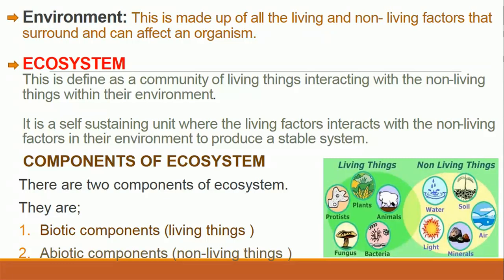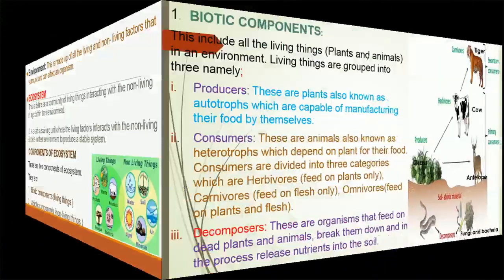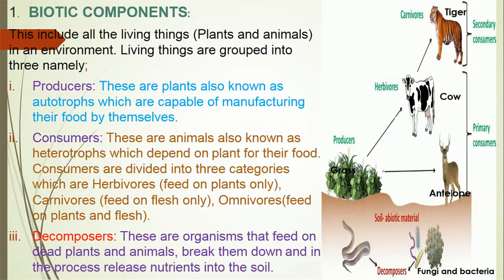There are two components of an ecosystem: one, biotic components, which are made up of all the living factors; and two, abiotic components, which are made up of all the non-living factors. Looking at the biotic components — these include all the living things in an environment, meaning plants and animals. Living things are grouped into three: producers, consumers, and decomposers.